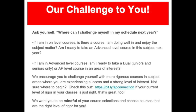Our challenge to students is to ask yourself: where can I challenge myself in my schedule next year? For students who are in on-level courses that are doing well, consider taking the advanced course level the next year. Students in advanced level courses who are ready to take on additional challenge should consider taking a dual credit course — open to juniors and seniors only — or an AP level course if offered in that subject area. We encourage students to challenge themselves with more rigorous courses in subject areas where they are experiencing success and have a strong level of interest. We want students to choose courses that are the right level of rigor for them.